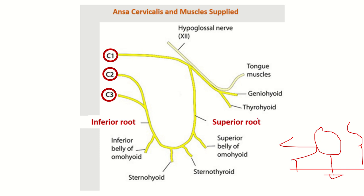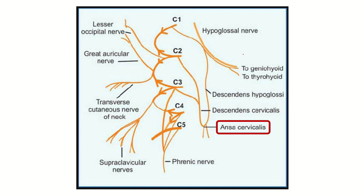Two other important muscles are also supplied by the ansa cervicalis: geniohyoid and thyrohyoid. So the nerve root of the ansa cervicalis is cervical one, cervical two, and cervical three. It gives rise to two roots — a superior root and an inferior root — and the muscles supplied are sternothyroid, omohyoid, sternohyoid, geniohyoid, and thyrohyoid.